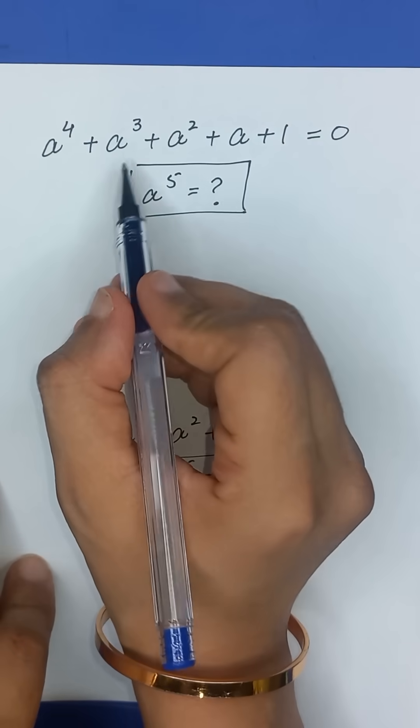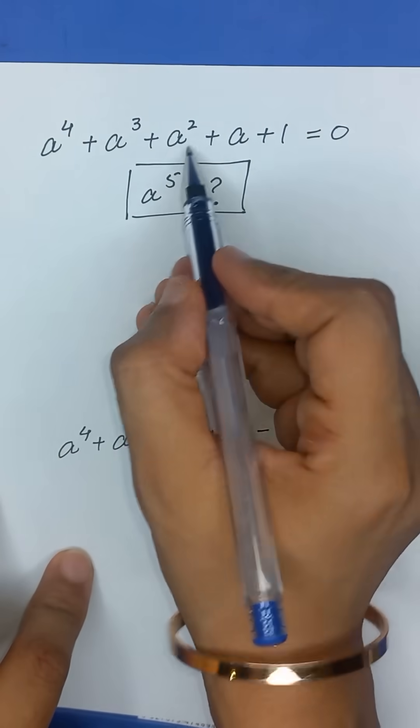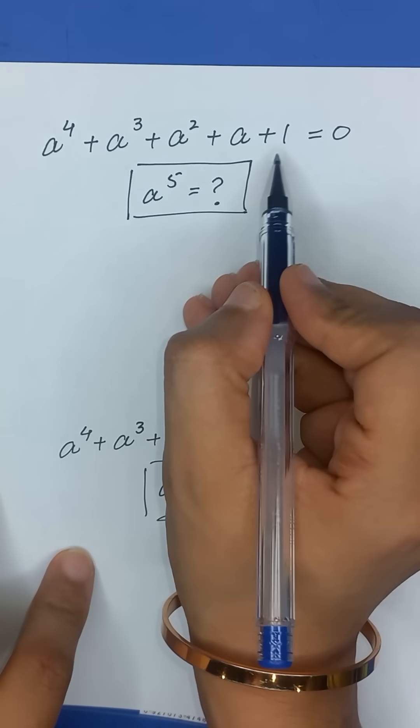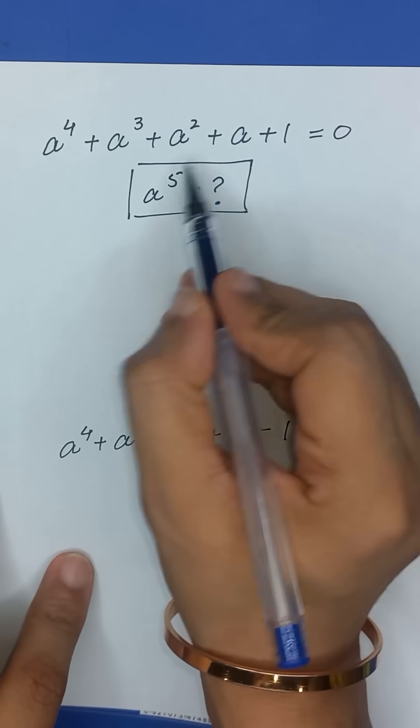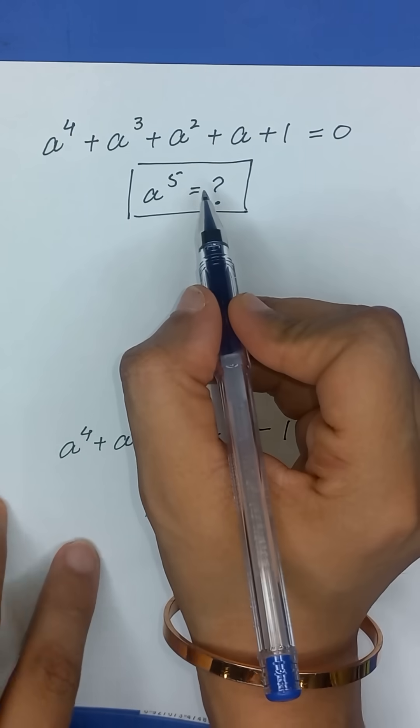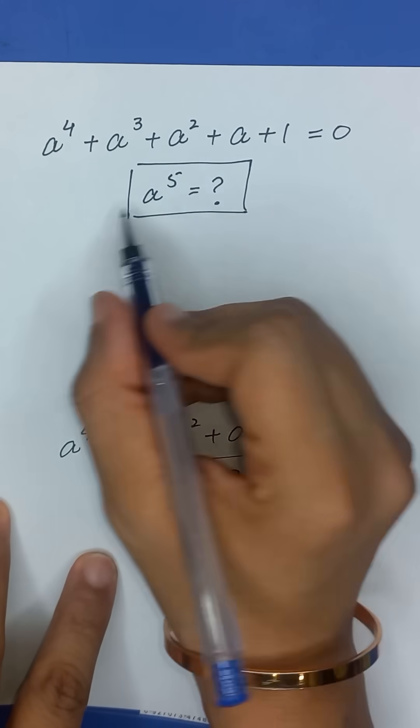a to the power 4 plus a cube plus a squared plus a plus 1 is equal to 0. What will be the value of a to the power 5?